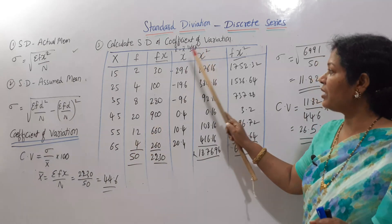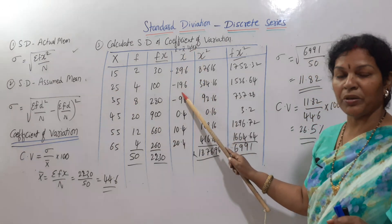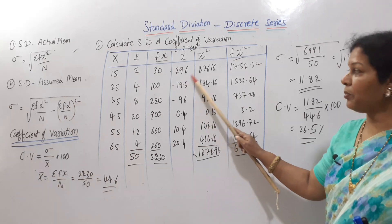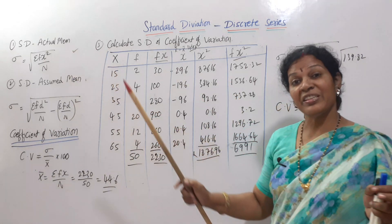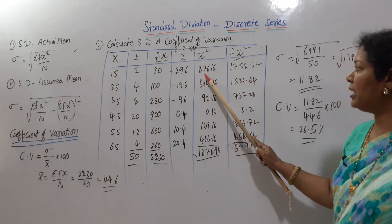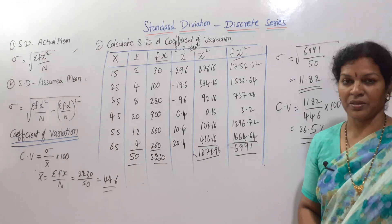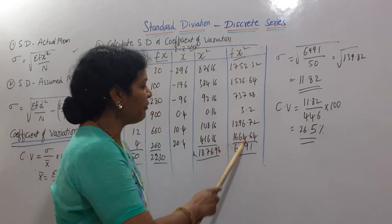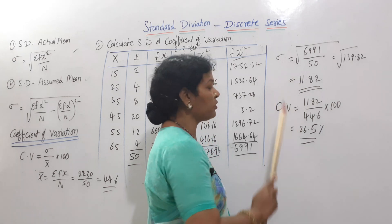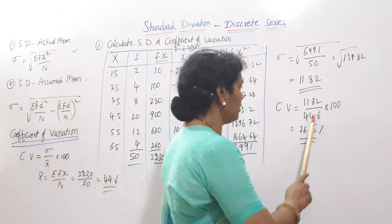Once you have x-bar = 44.6, calculate deviations x = X minus x-bar. For example, 15 minus 44.6 = minus 29.6. Then compute x-square for each deviation. Add a column for f times x-square: 2 × 876.16 = 1752.32, and so on. Apply the formula rho equals square root of sigma f·x-square divided by n (n = 50) to get the standard deviation, then compute CV as rho divided by x-bar times 100 to get 26.5 percent.